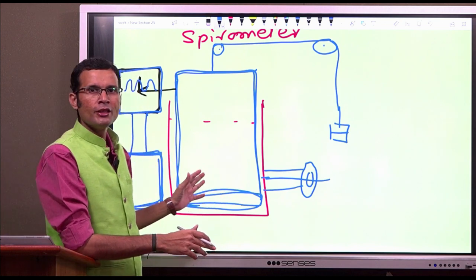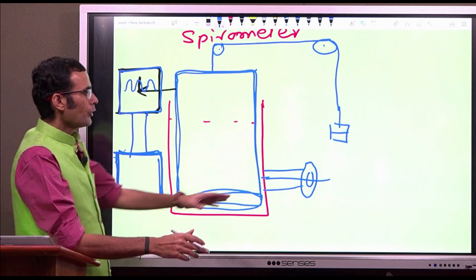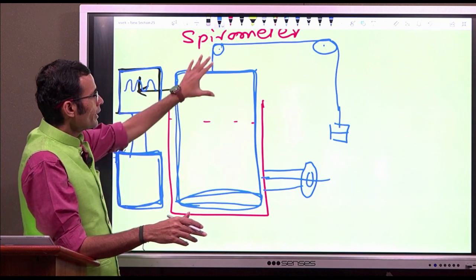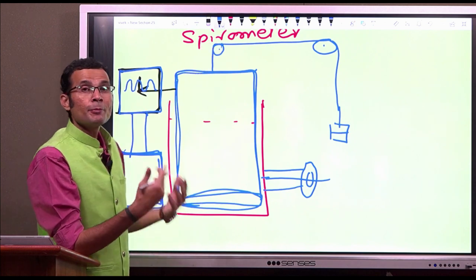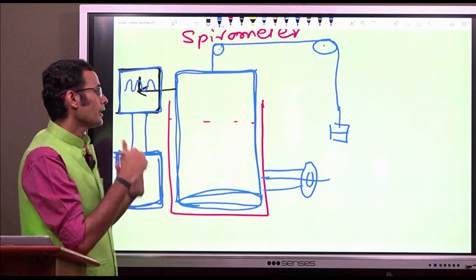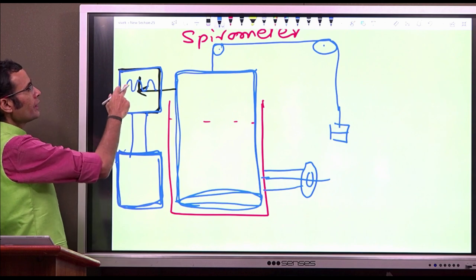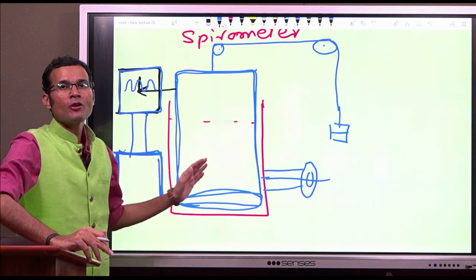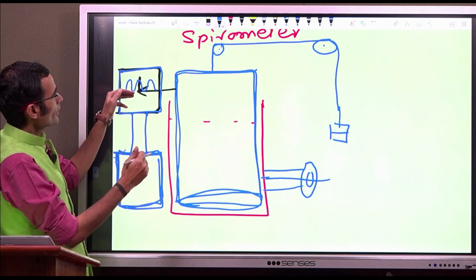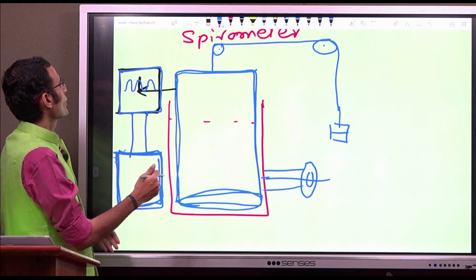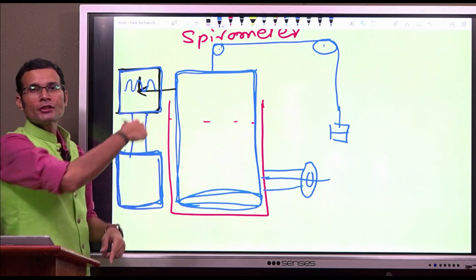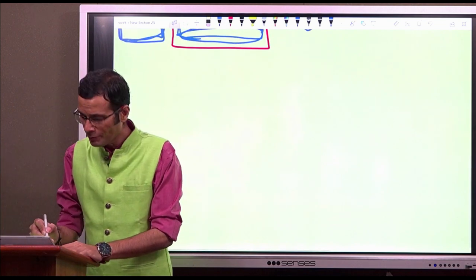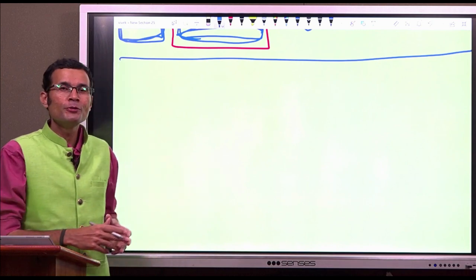This is a very simplistic model. Basically, we put air into this container filled with water, the inverted drum is displaced by the amount of volume inhaled or exhaled, and the height of those curves tells us how much volume was inspired or expired. Inspiration the writing lever goes up, expiration it comes down, and since it is on a rotating drum, we get these curves continuously. Now, let us see the lung volumes and capacities.